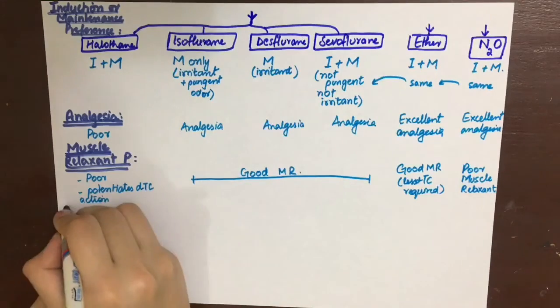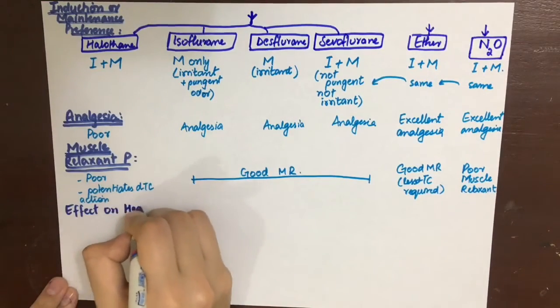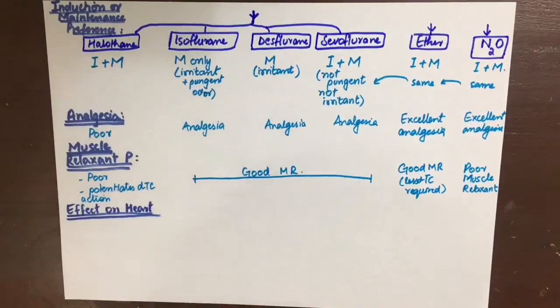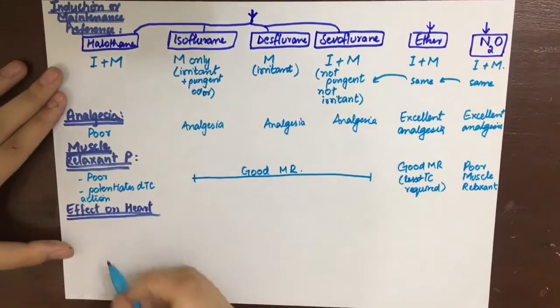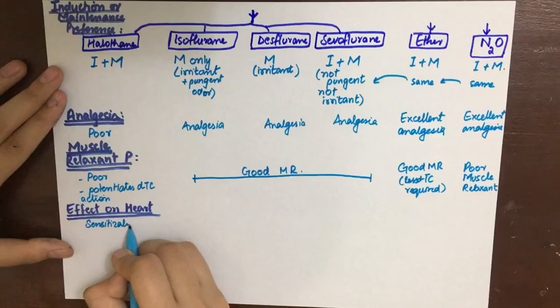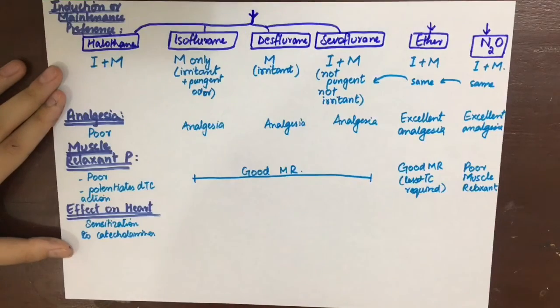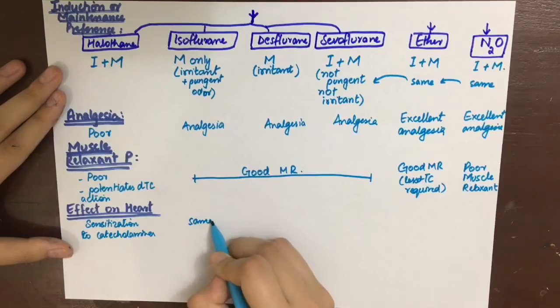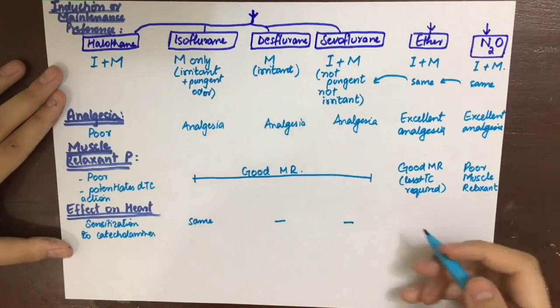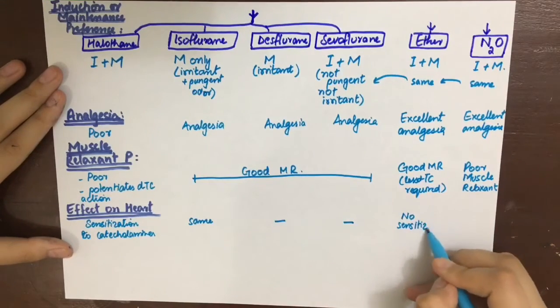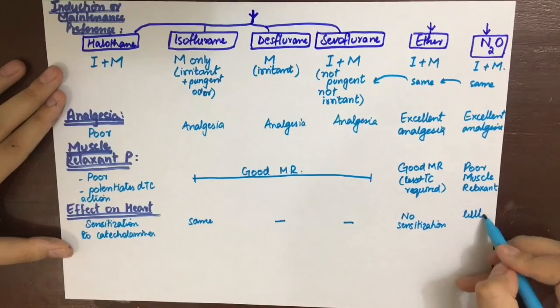Now let's see if these general anesthetics have any effect on increasing the sensitization of the heart to catecholamines. Halothane does that. It increases the sensitivity of the heart to catecholamines. And this is not very good because it can increase the blood pressure and all sort of that sympathetic stimulation which is not required in an operating room.